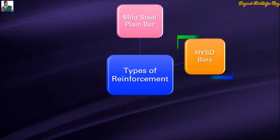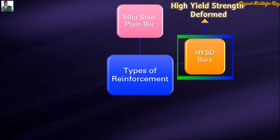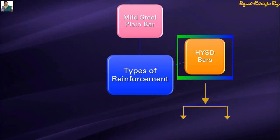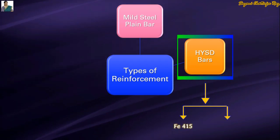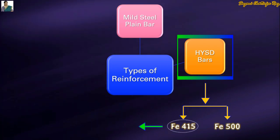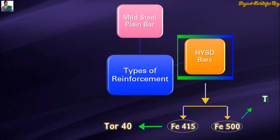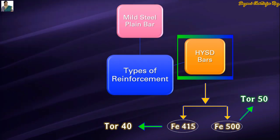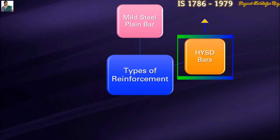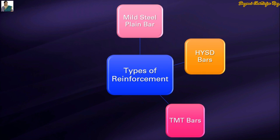The next type is HYSD bars, which is the abbreviated form of High Yield Strength Deformed bars. HYSD bars are available in two grades: Fe 415 and Fe 500. Fe 415 grade is also known as Tor 40, and Fe 500 grade is also known as Tor 50. The relevant IS code for HYSD bars is IS 1786:1979.